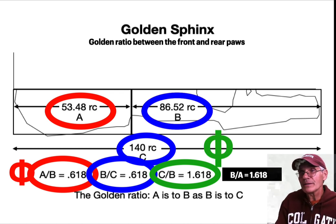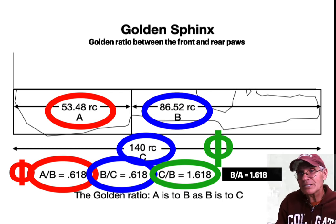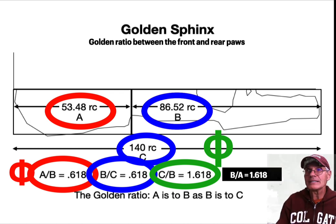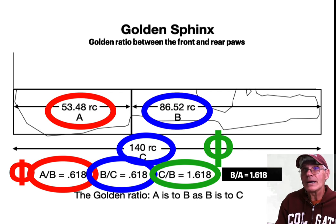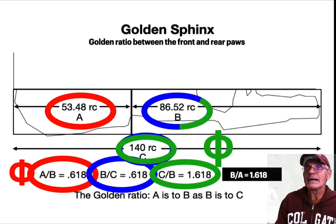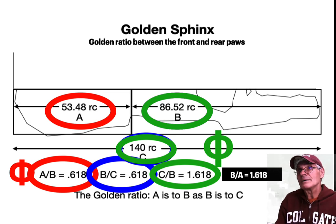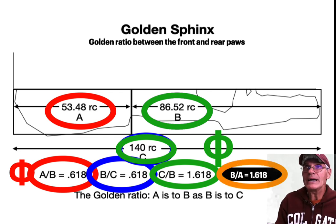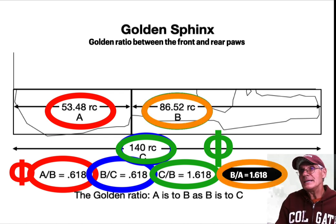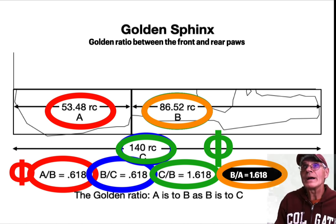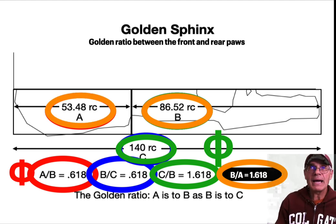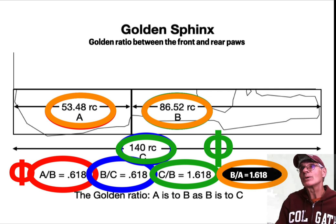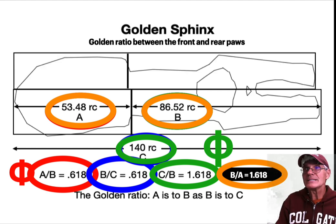Now we go to 1.618 — c over b — which is often represented with capital Φ. So 0.618 and 1.618 are both Phi. For c over b, if we take the full length of the Sphinx and divide it by that front paw-to-paw measure, we again get Phi. And for b over a, taking b (86.52) over the back half of the Sphinx gives us 1.618.